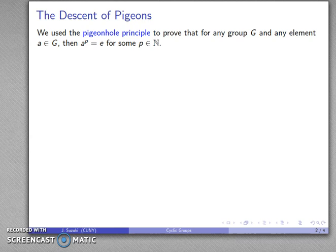Earlier we used the pigeonhole principle to prove that for any group G and any element a ∈ G, then a^p = e for some p ∈ ℕ.